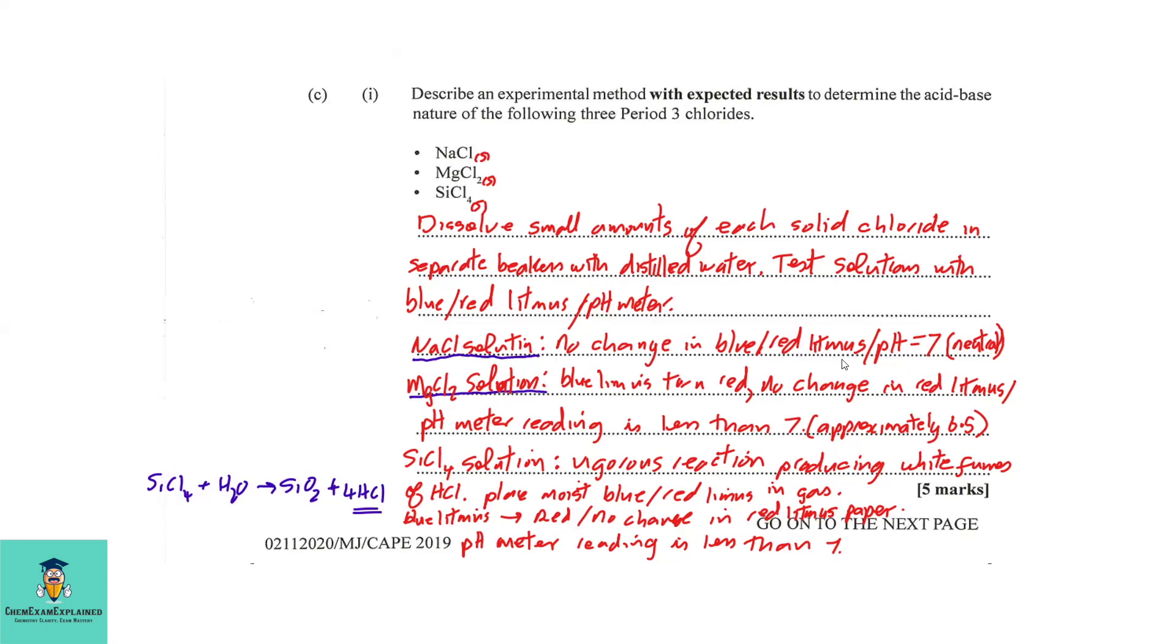So with the pH meter, you should get a pH of 7. In testing with the blue and red litmus paper for magnesium chloride solution, we are going to experience a color change in the blue litmus paper turning red. And the pH meter should give you a reading less than 7, and that could be approximately 6.5.